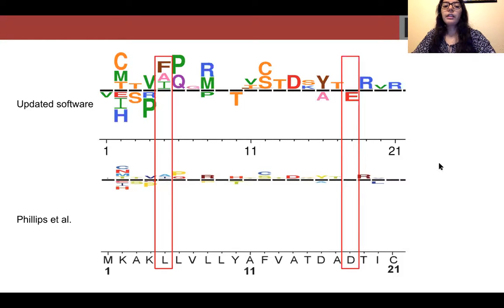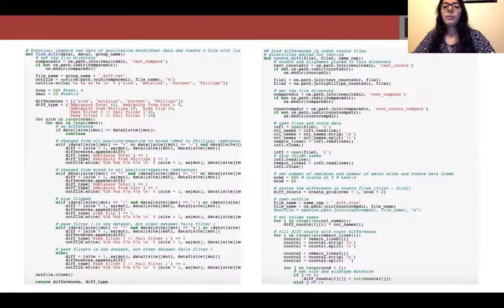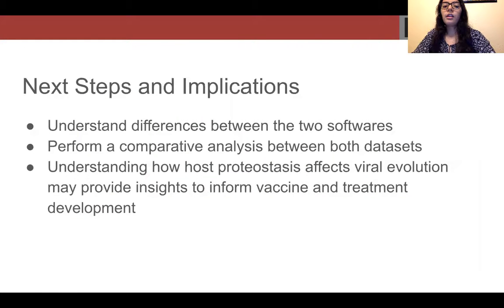Before continuing with the comparative analysis, I needed to know why the updated software yields a distinct sequence logo plot. I spent a significant amount of time writing a script to characterize the differences between the differential selection results produced by my analysis and the original, and have been working closely with Dr. Vincent Buddy to pinpoint the cause of the observed differences. My next step would be to gain a better understanding of what causes the difference between both softwares, and then perform a comparative analysis on the datasets.